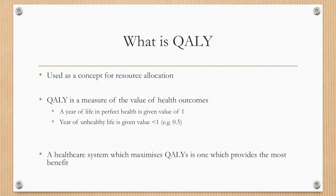So what is a QALY? It's used as a concept of resource allocation. A quality adjusted life year is a measure of the value of health outcomes. A year of life in perfect health is given a value of one, and a year of unhealthy life is given a value of less than one, which may be 0.5, 0.3, etc. A healthcare system is therefore one which maximizes quality adjusted life years and provides the most benefit for patients.